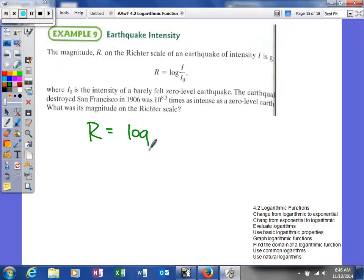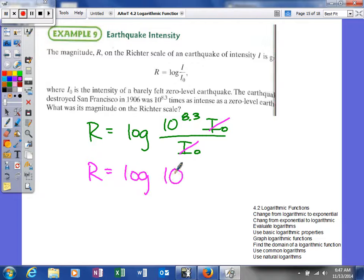So it gives us I as 10 to the 8.3 times the original intensity over the original intensity. So what's going to happen is those I sub 0's will actually cancel. And then we're going to be left with R is equal to the log of 10 to the 8.3 power. Now I don't need to use my calculator on this one because what I know is the base of our logarithm, since there's not one written, is 10. And since we have 10 to some power, those are inverse operations.